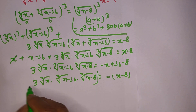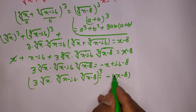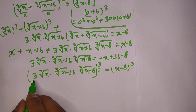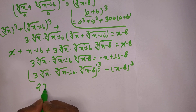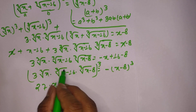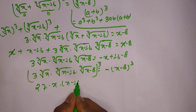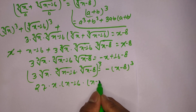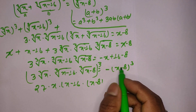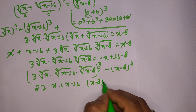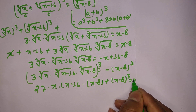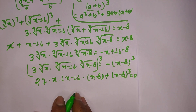We cube both sides again. On the left, 3³ is 27, and cube root of x cubed is x, cube root of x minus 16 cubed is x minus 16, and cube root of x minus 8 cubed is x minus 8. Moving the right side over, we get plus (x minus 8) cubed equals 0.